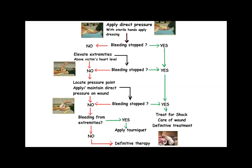If a tourniquet is applied for a cut or wound, it prevents blood from entering general circulation beyond that point. After applying it and stopping the bleeding, the patient must definitely go for treatment. The tourniquet can solve the immediate problem, but the patient must be hospitalized; otherwise the patient remains in a dangerous situation.